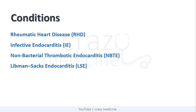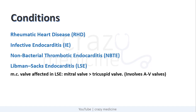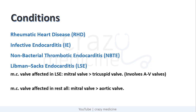The first MCQ point is: in Libman-Sacks endocarditis, the most common valve affected is the mitral valve followed by the tricuspid valve, but in all the rest, the most common is mitral followed by the aortic valve. So we can say that in Libman-Sacks endocarditis there is mainly atrioventricular valve involvement.